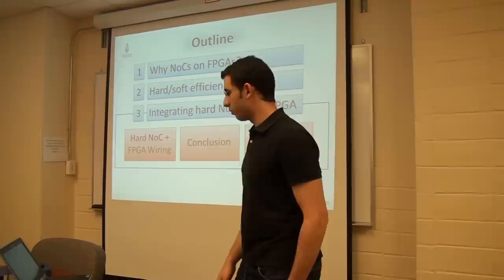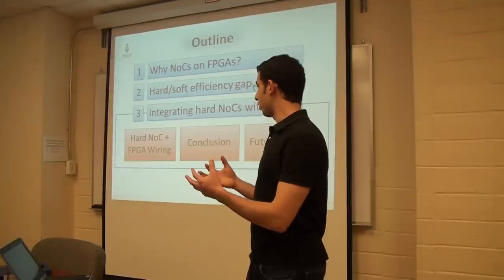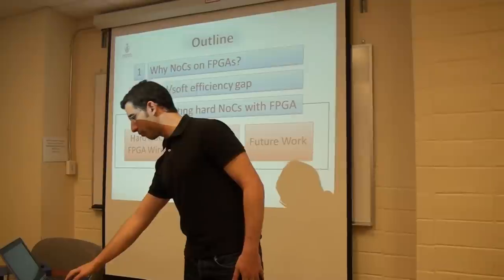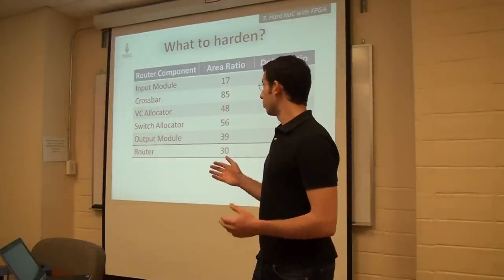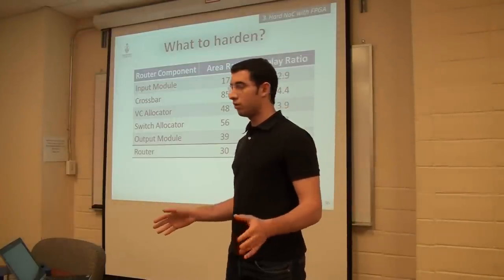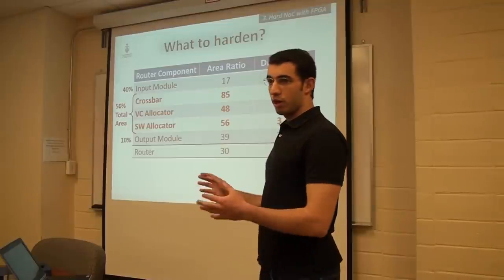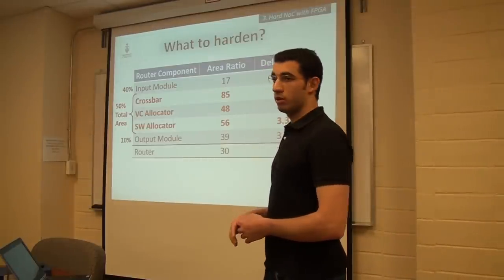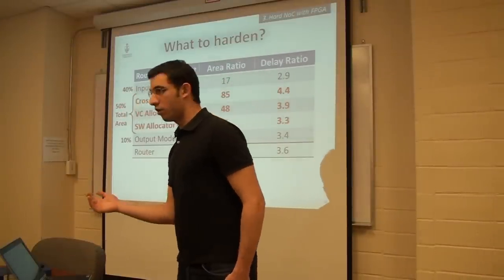Now my favorite part: integrating the hard network with the FPGA. We looked at our results and asked what to harden and what to leave soft. At first glance, the crossbar and allocators — which account for half the router area — are the worst things to implement on the FPGA. The critical path also runs through one of them, so hardening those components would speed up routing.